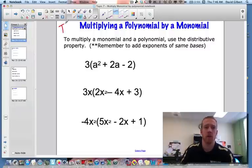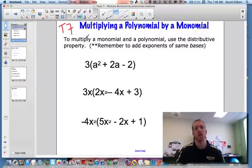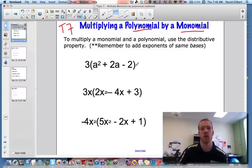Alright, so here we go with topic 7 from our chapter 7: Multiplying a polynomial by a monomial. So we've already defined what these terms are, and here's the simplest thing that we're going to do with them. Basically, this is going to be the distributive property, and then we're going to combine like terms.